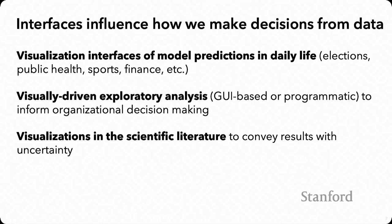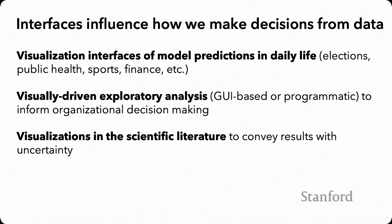Visualizations in the scientific literature convey results under uncertainty. In these various settings, visualization techniques are often preferred for interacting with data because they have this ability to offload cognition to perception, making it easier for us to identify patterns and relationships.